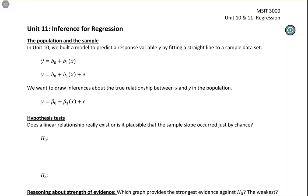In Unit 10, we built a model to predict a response variable by fitting a straight line to a sample data set. When calculating from a sample, the intercept and slope, b₀ and b₁, are statistics. These are numbers calculated from the sample.